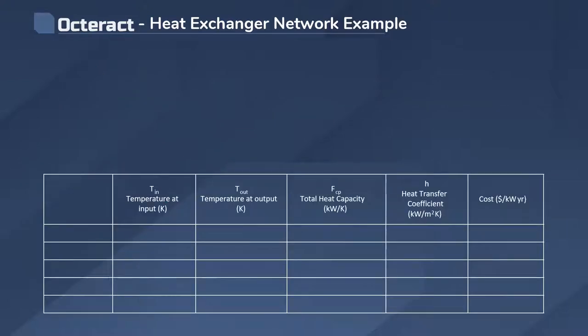Let's see a brief example of how decisions concerning the design of these networks are being taken today. Let's assume we want to design a heat exchanger network comprising of a hot stream H1, which arrives from a process with a temperature T in and needs to be cooled down to a temperature T out.